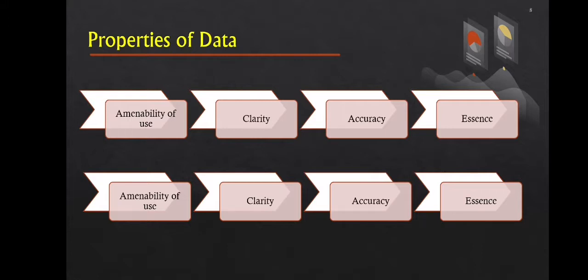Next is essence. Huge amounts of data are obtained that cannot be presented in their raw format and must be compressed and fine-tuned. The substance or derived qualitative meaning of the matter can be presented using such refined data. In science, data is made up of measurements from experiments, all of which are calculated quantities. In addition to these four properties — amenability of use, clarity, accuracy, and essence — there are three more properties: aggregation, compression, and refinement.